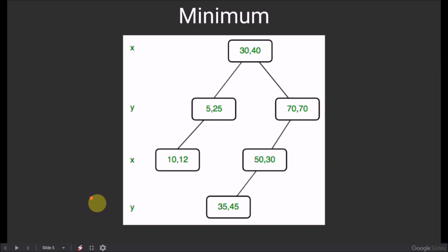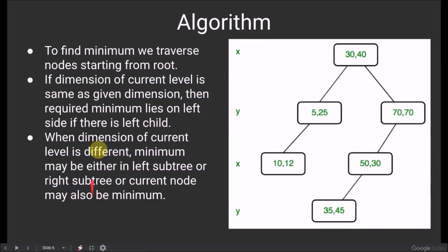Now let us look at the algorithm. To find minimum, we traverse nodes starting from the root. The root of this tree is 30,40. If dimension of the current level is same as given dimension, then required minimum lies on left side if there is a left child.